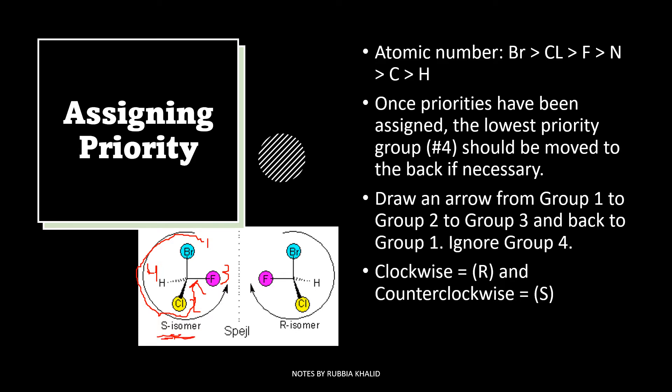Same in the R isomer. Bromine is one, chlorine is two, hydrogen is four, and then fluorine is three. So in this we have to move from one to two and then three, from bromine to chlorine and then fluorine which is clockwise. So this is R isomer.